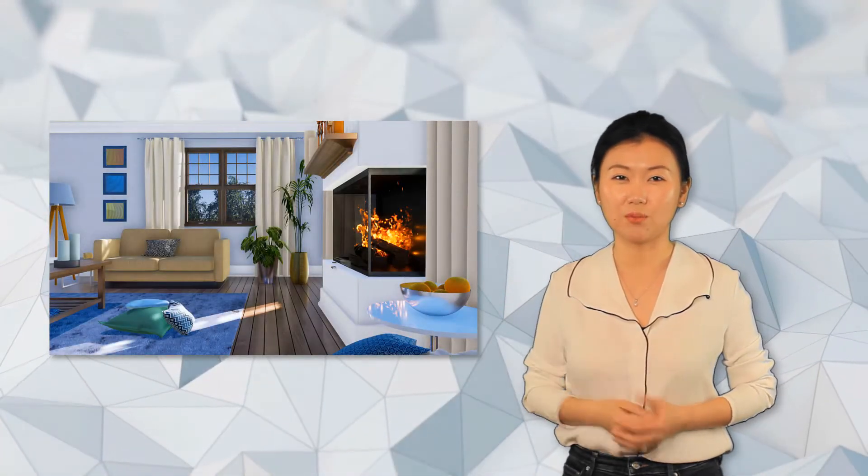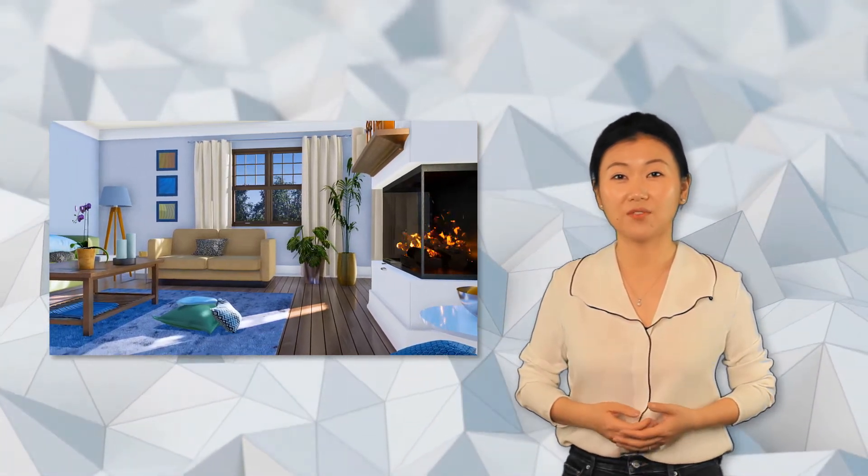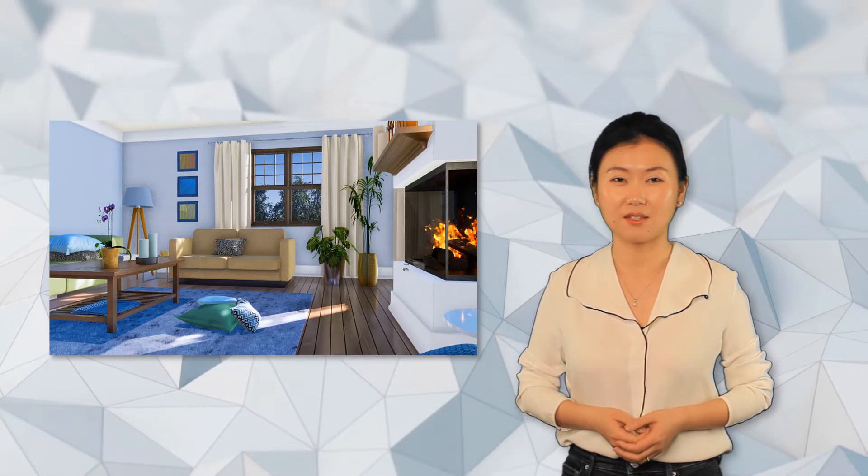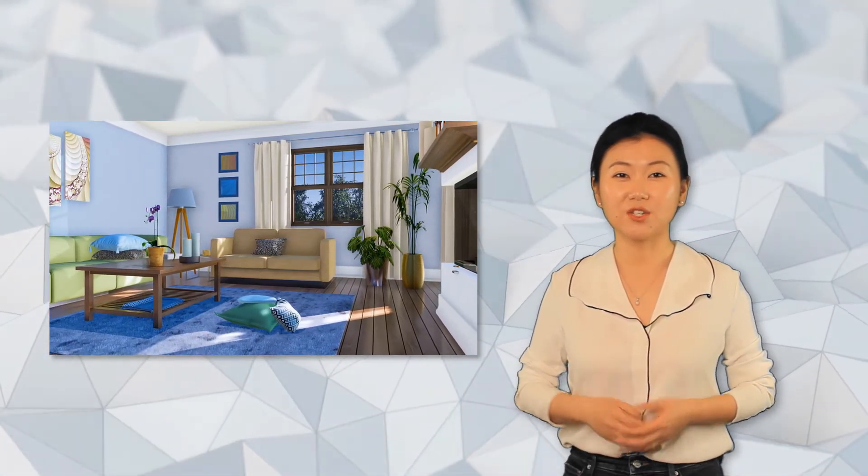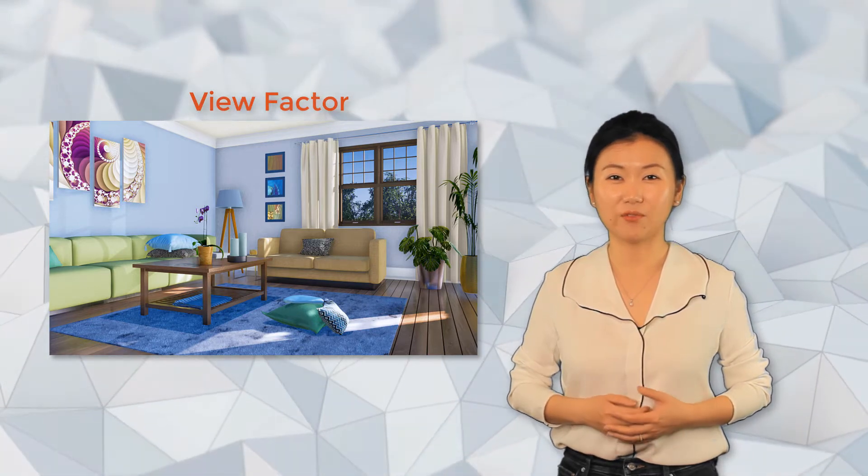For example, if there's a nice fireplace in a living room, the radiated heat from the fireplace to the different walls is not uniform because of different orientations and distances. Also, for the furniture, you can imagine that for different surfaces, the amount of radiation heat to them are not the same. View factor accounts for the effect of orientation between surfaces for radiation heat transfer.